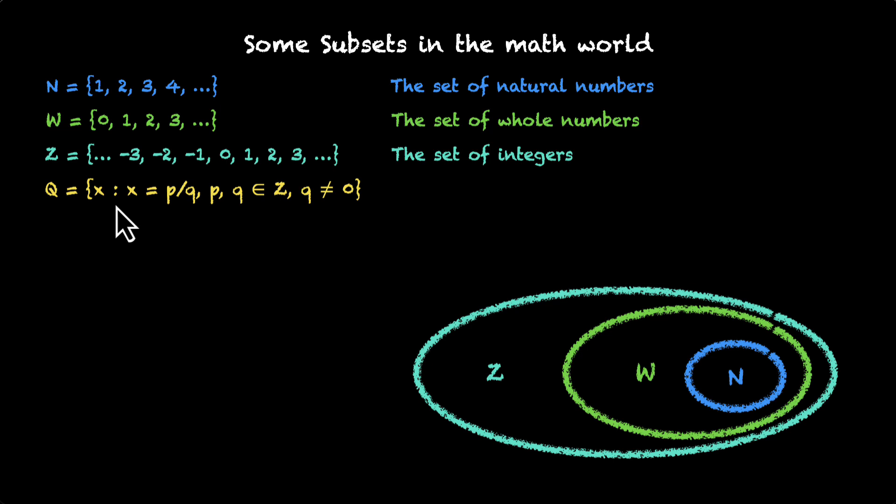Then we have q, and we have written q in the set builder form. We have q which has x such that x is equal to p by q where p and q belong to z which is the set of integers and q is not equal to 0. Let's break this down. We have x where x is p by q which means we're looking at fractions and p and q are integers, and q is not equal to 0.